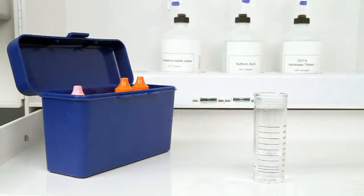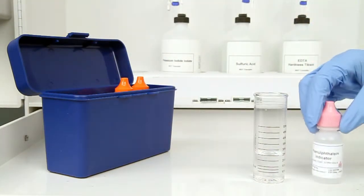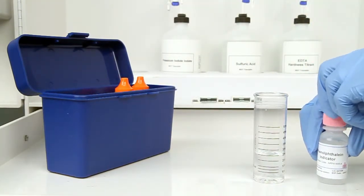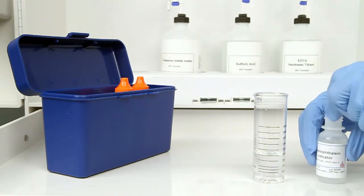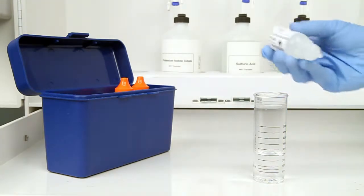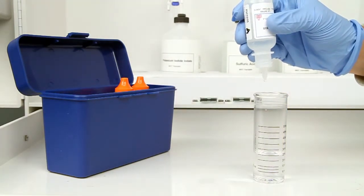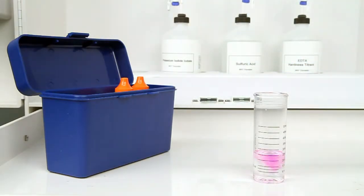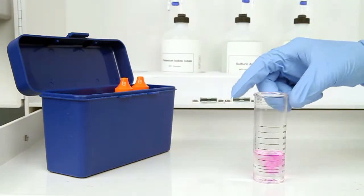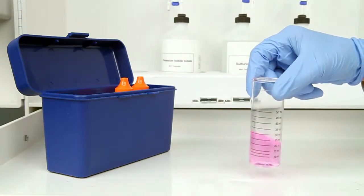The next step according to the endpoint ID procedure is to add one drop of phenolphthalein indicator. The bottle contains a dropper tip, so it's important to hold the bottle vertically to get a consistent drop size. After the addition of each reagent, it's important to swirl the vial to make sure the reagents are properly mixed.